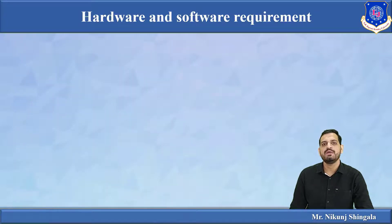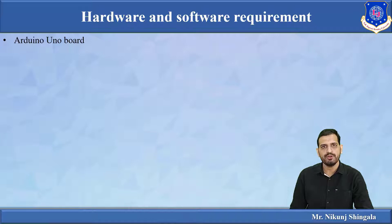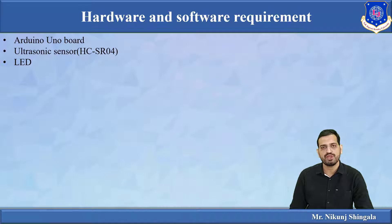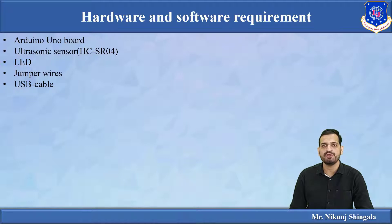Let us start with the hardware and software requirements for measuring distance using ultrasonic sensor. First is the Arduino UNO board. The ultrasonic sensor used is the HC-SR04, which is a widely used sensor. You can also use an LED for indication — for example, if the measurement goes beyond a certain threshold distance. Jumper wires and a USB cable are also required for loading the program from a computer or laptop. For circuit simulation, we require Proteus Design Suite and Arduino IDE for writing the code.